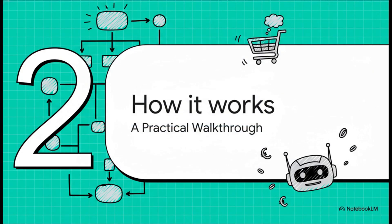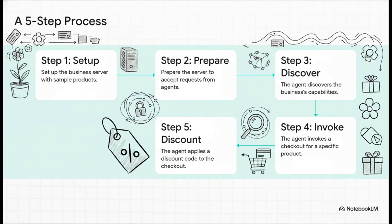Now let's get down to brass tacks and make this more concrete. We're going to do a practical walkthrough to see exactly how the protocol works in action with a sample business and an AI agent, following a simple five-step journey. It's going to show us precisely how an AI shopping agent and a flower shop server talk to each other using UCP, from that very first connection all the way to applying a discount code.